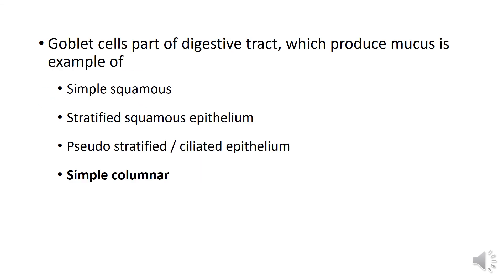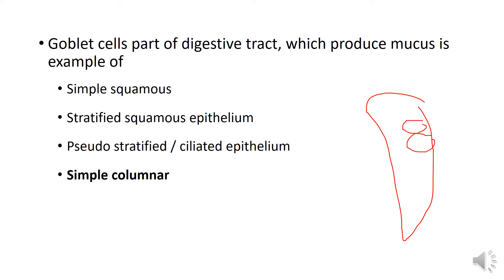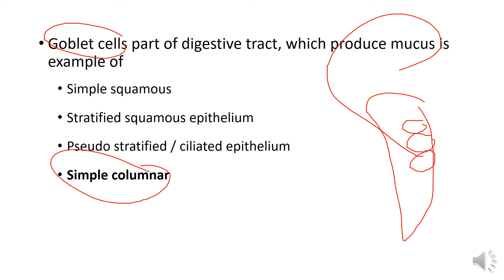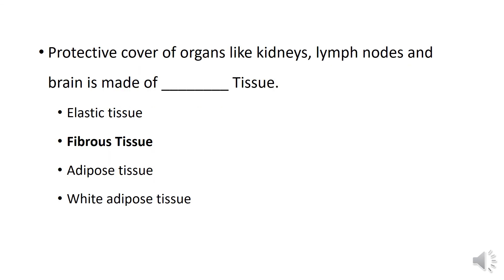Goblet cells are present in the digestive tract and produce mucus. Goblet cells are present in simple columnar epithelium. This goblet cell is responsible for mucus production. Simple columnar tissue is made up of these cells and is found lining the digestive tract.